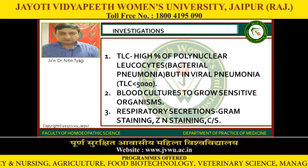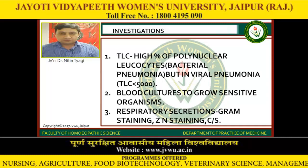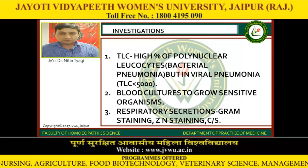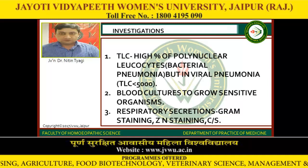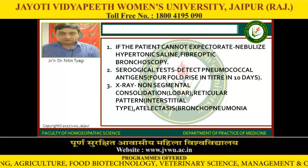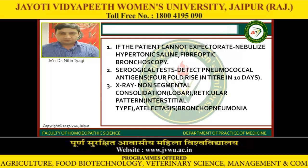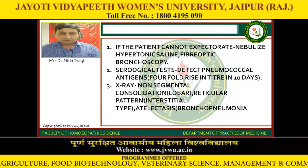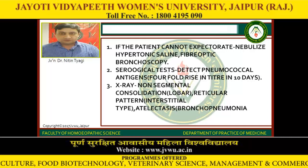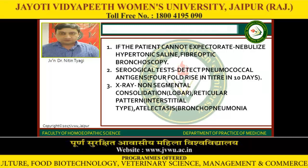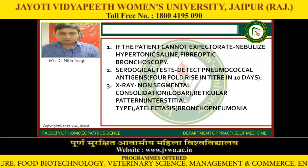Investigations: TLC shows high percentage of polynuclear leukocytes in bacterial pneumonia, but in viral pneumonia TLC is less than 5000. Blood cultures are done to grow sensitive organisms. Respiratory secretions: Gram staining, ZN staining, and culture and sensitivity. If the patient cannot expectorate, nebulization with hypertonic saline or fibreoptic bronchoscopy is used. Serological tests detect pneumococcal antigens with a fourfold rise in titres in 10 days. X-ray shows non-segmental consolidation in lobar pneumonia, reticular pattern in interstitial pneumonia, and atelectasis in bronchopneumonia.